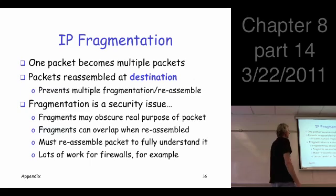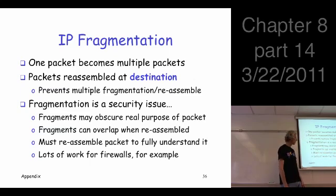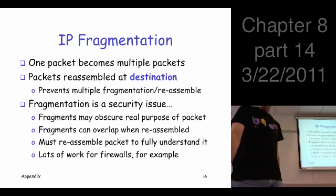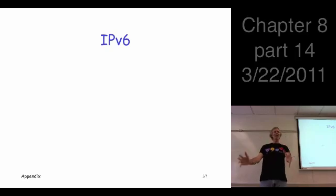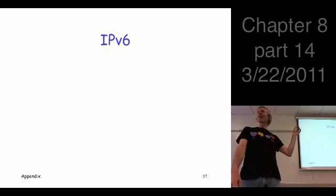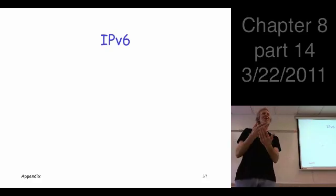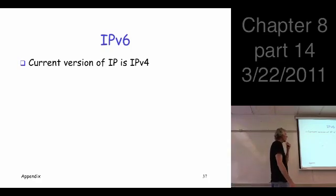Fragments are reassembled at the destination and can obscure the purpose of the packet — that's the crucial issue. They can also create a big burden for firewalls. Now, IP version 6: the version of IP we use now is IP version 4, right? The new and improved version is IP version 6.